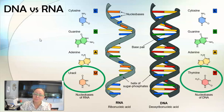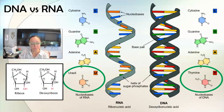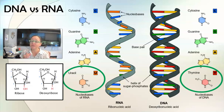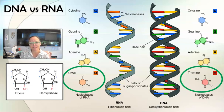Another difference is their sugar. While they're both made of nucleotides, the five-carbon sugar is different. RNA has the five-carbon sugar ribose, and DNA has the five-carbon sugar deoxyribose. The only difference is that deoxyribose is missing an oxygen — that's what 'deoxy' stands for.